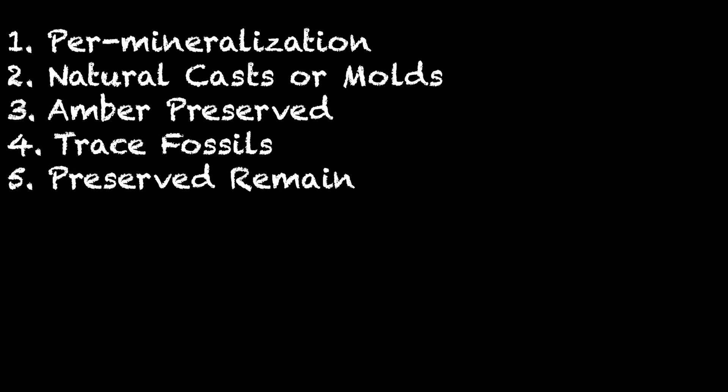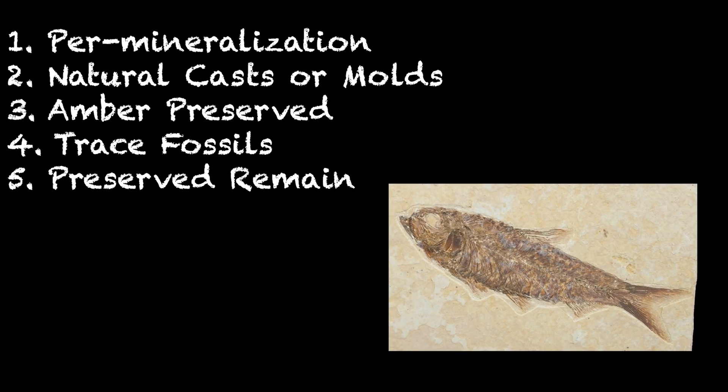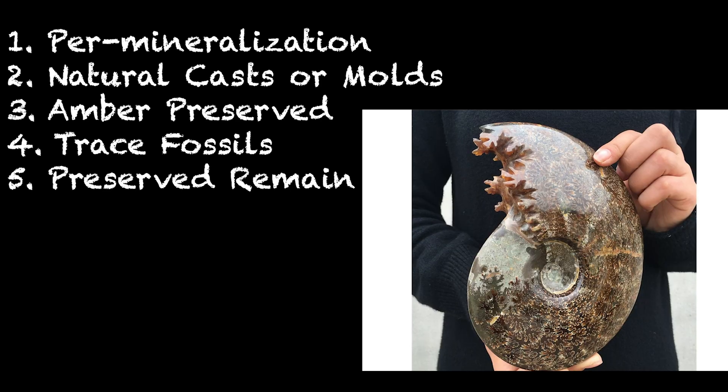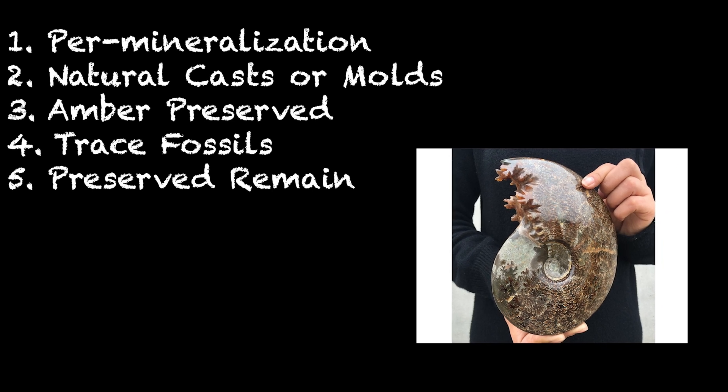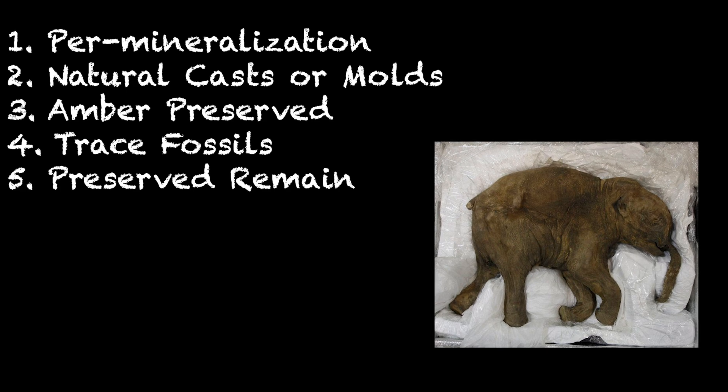Fifth one is preserved remains. Preserved remains record intact remains of animals, often including preserved skin, muscle, bone, hair, and internal organs. Examples are mammoths.